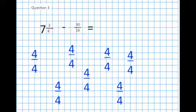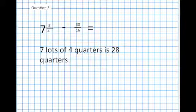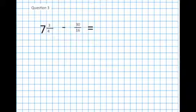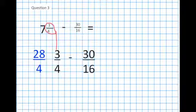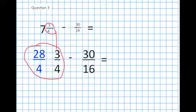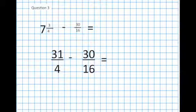7 lots of 4 quarters is 28 quarters. So we can turn 7 and 3 quarters into 28 quarters. Now we can take our 3 quarters. And we've got 30 sixteenths to take off that. We need to add these together. 31 quarters take away 30 sixteenths.